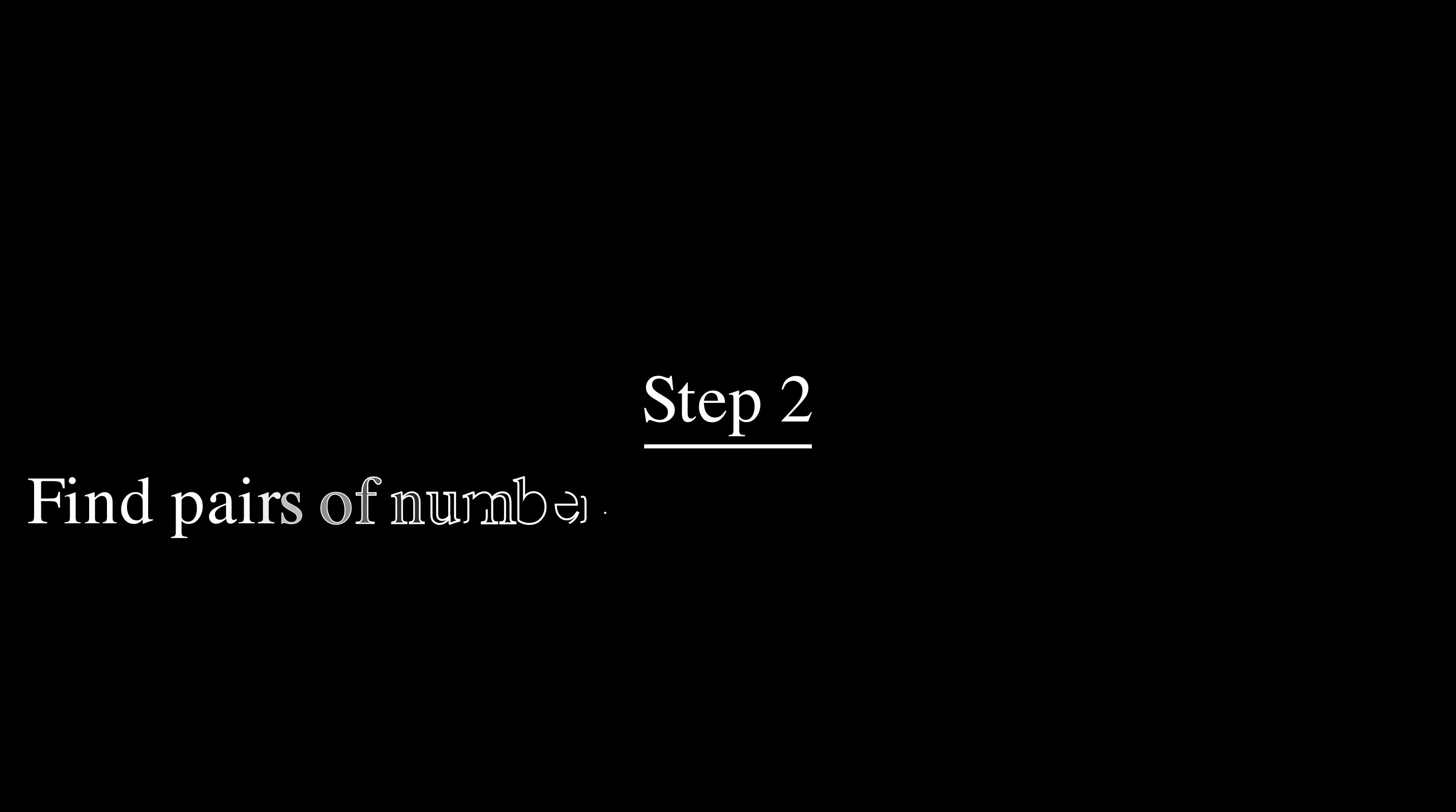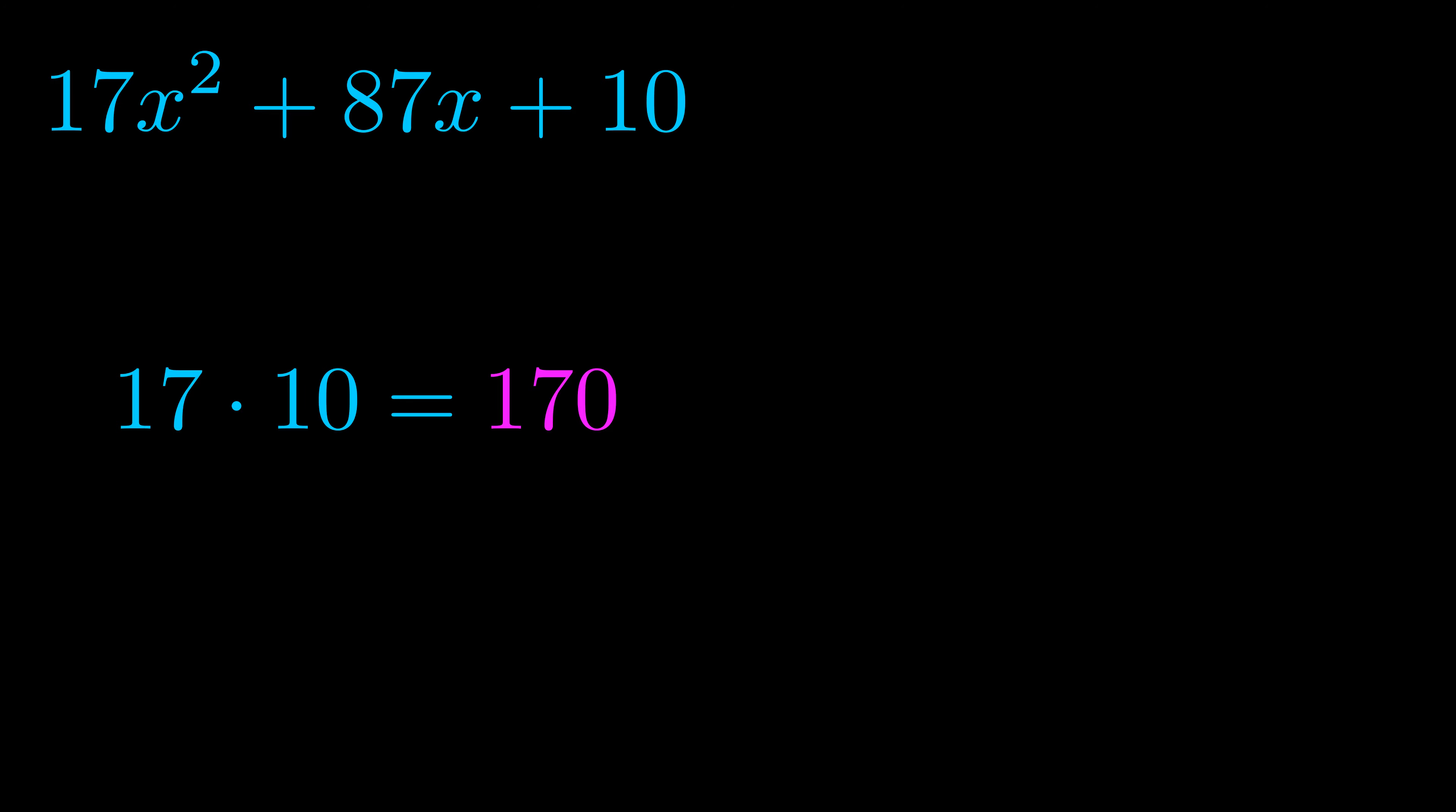Step two is to try to find all of the pairs which multiply to this number. Now it turns out you don't really need to find all of them, but go ahead and write down as many numbers as you can that multiply to the magenta value for now. Pause the video and resume when you're ready to continue. Okay, here's what I came up with.